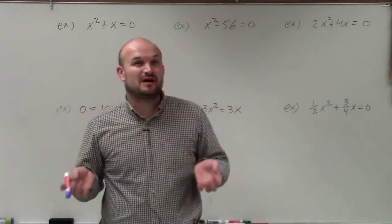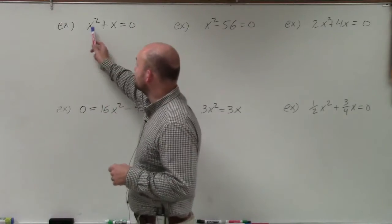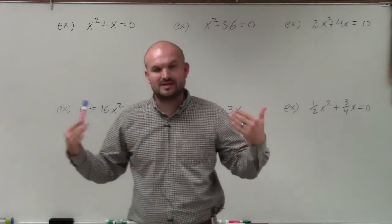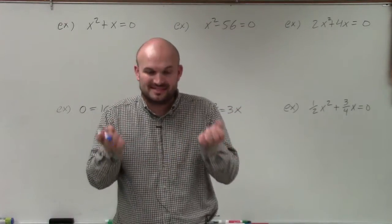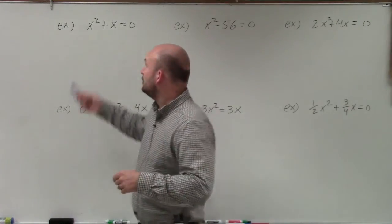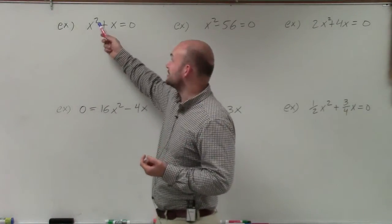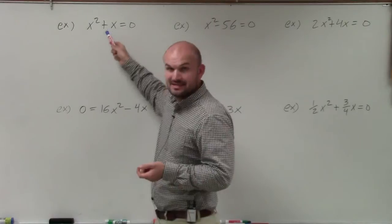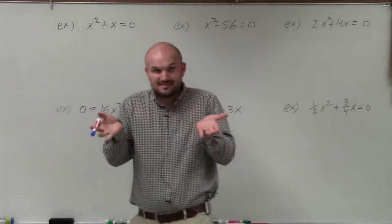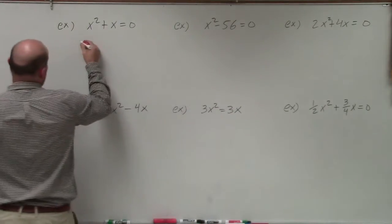Now the next thing we want to do is factor out its common terms. You can see between x squared and x, what do they share in common? What can we divide out that's exactly the same out of both of them? You can divide an x into an x squared, and you can divide an x into x. Therefore, x is my common factor. So when I divide out an x, I'm left with x plus 1.